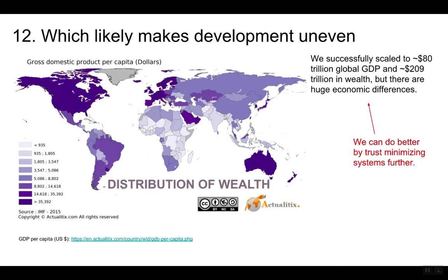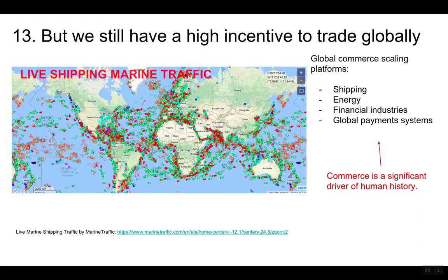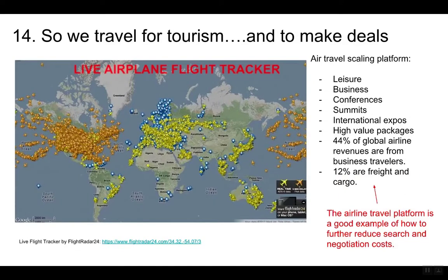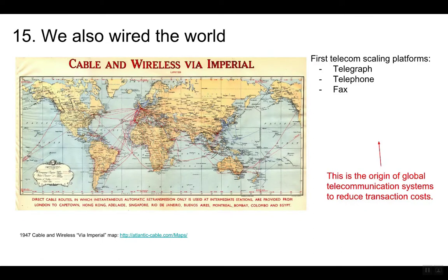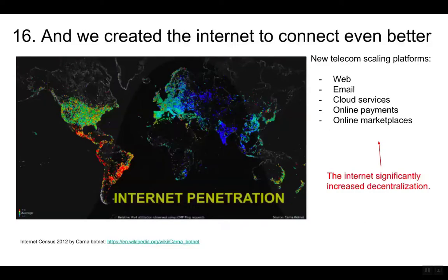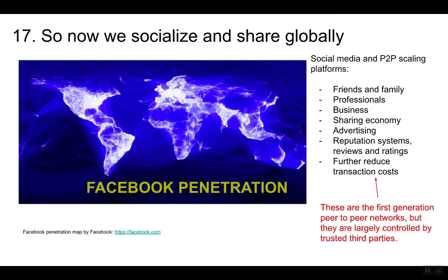We can do better by trust-minimizing systems further, but we still have a high incentive to trade globally. Commerce is a significant driver of human history. So we travel for tourism and to make deals. The airline travel platform is a good example of how to further reduce search and negotiation costs. We also wired the world — the origin of global telecommunication systems to reduce transaction costs. And we created the internet to connect even better. The internet significantly increased decentralization. So now we socialize and share globally, but these first-generation peer-to-peer networks are largely controlled by trusted third parties.